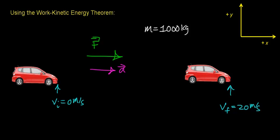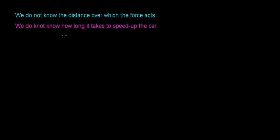What we're going to do now is apply the work kinetic energy theorem to figure out how much energy is required to speed up this car from rest to a final velocity of 20 meters per second. There are two reasons we'll use the work kinetic energy theorem here. The first reason is we don't know the distance over which this force acts. The other thing we don't know is how long it takes to speed up this car, because if we knew that, we could figure out the car's acceleration and then figure out how much force was required. But in this case, we don't know either of these two things.